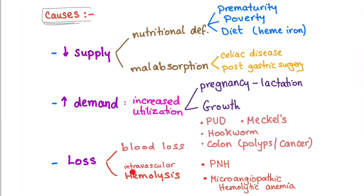Intravascular hemolysis must be intravascular — the blood gets broken down, eventually passes through the kidney, and a lot of iron is lost there. Conditions include microangiopathic hemolytic anemia and paroxysmal nocturnal hemoglobinuria. These are the causes of iron deficiency anemia: decreased supply, increased demand, or blood loss.